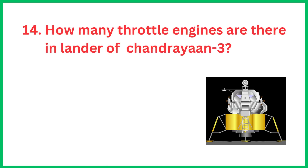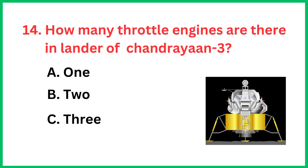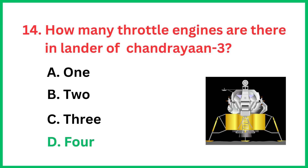How many throttle engines are there in the lander of Chandrayaan-3? The correct answer is option D, 4.